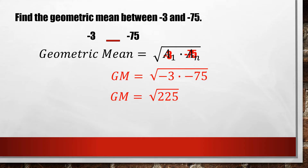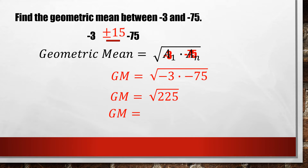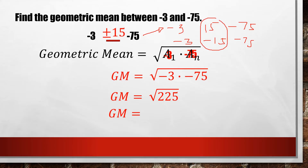Getting the square root of 225 gives us a positive and a negative value: positive and negative 15, which is our geometric mean. Our sequence could be negative 3, positive 15, then negative 75. Or our sequence could be negative 3, negative 15, then negative 75. Any of these two could be our geometric mean to be inserted — still, this will create a geometric sequence.